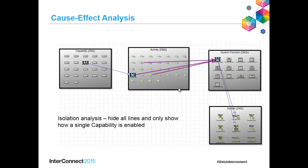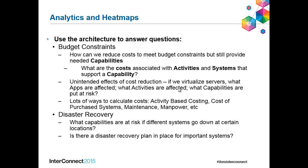Explorer diagrams are great that way, and you can publish them to an architecture website so that people can see this daisy chain analysis. You can also use heat map analysis. More questions: budget constraints — how can we reduce costs but still provide needed capabilities? Unintended effects of cost reduction: if we virtualize servers, what apps are affected, what activities are affected, what capabilities are put at risk? Activity-based costing, disaster recovery analysis — all of this is part of what enterprise architecture enables you to do, analyze, and act on.